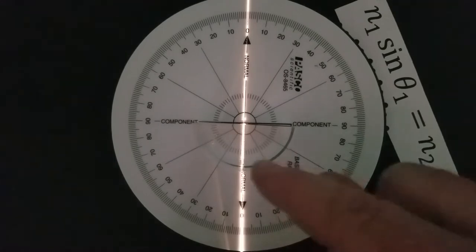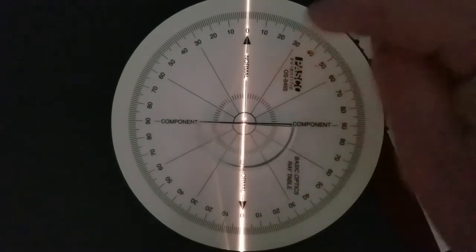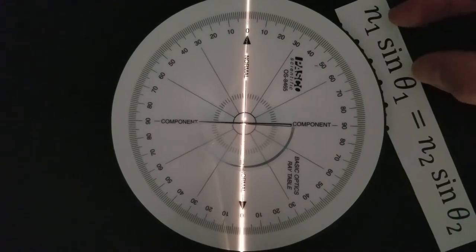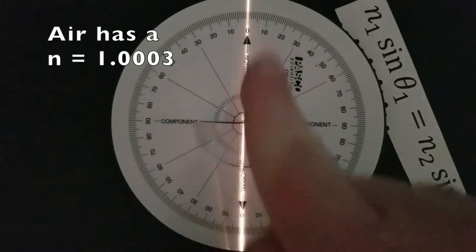We're going to have a beam of light go from inside our solid plastic, which is a more optically dense material, into air, which is a less optically dense material. Our solid is going to be our first medium, and air is going to be our second medium. Right now it's just passing straight through.